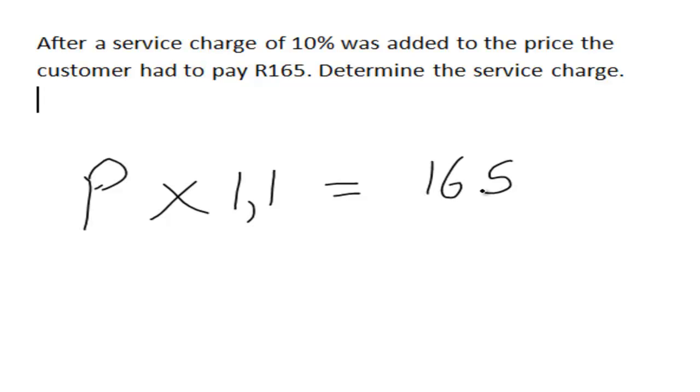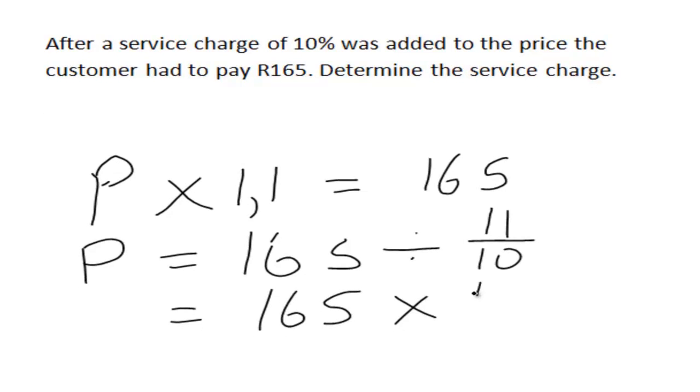So if we want to work backwards to our price, then P is equal to 165 divided by 1.1. 1.1 is 11 over 10, and that is 165 times 10 over 11.